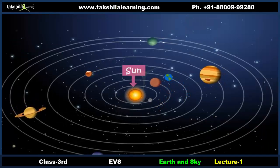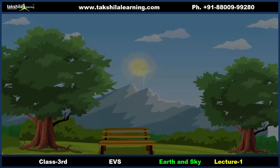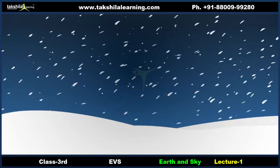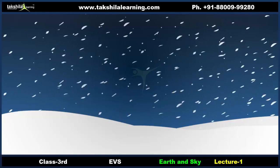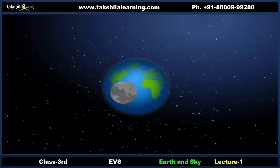The Sun is the head of the solar system. It is a star which emits its own light. Sunlight is very important for the existence of life on Earth. Without sunlight, Earth would have been very cold and could not have supported life.